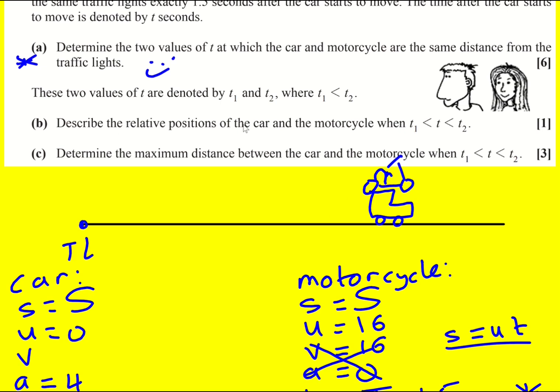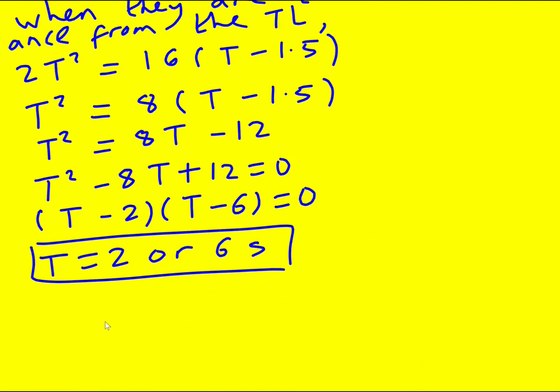This actually leads into part B. Describe the relative positions of the car and the motorcycle for t is between t1 and t2. We're told that the two values are denoted by t1 and t2. So for us, that's 2 and 6. So the car's ahead. It's been moving for 1.5 seconds when the motorcycle reaches the traffic lights. And then 0.5 seconds later, so 2 seconds in total for the car, it overtakes. And then it stays ahead until the car speeds up enough to catch up again. So for B, we just need to write down that the motorcycle is ahead of the car.